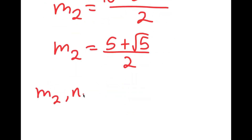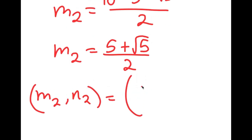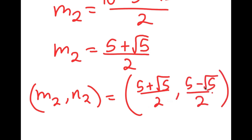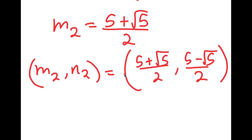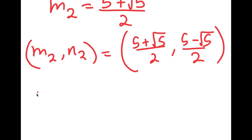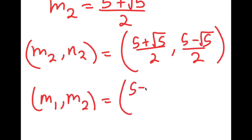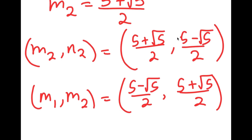So m₂, n₂ equals (5 plus the square root of 5 over 2, 5 minus the square root of 5 over 2). Notice how the two solutions are just the reverse of each other: solution 1 is (5 minus √5 over 2, 5 plus √5 over 2), and solution 2 is (5 plus √5 over 2, 5 minus √5 over 2) — they just switched order. These two are my two solutions.